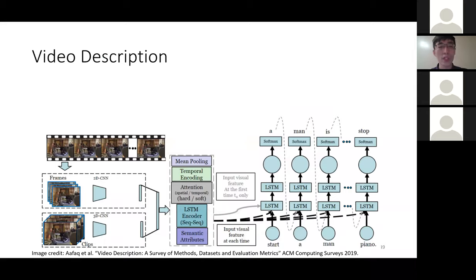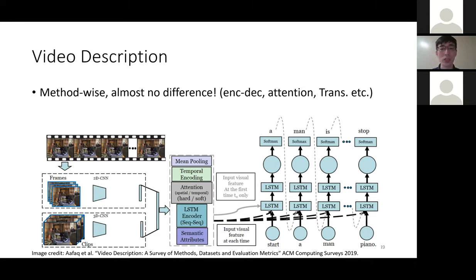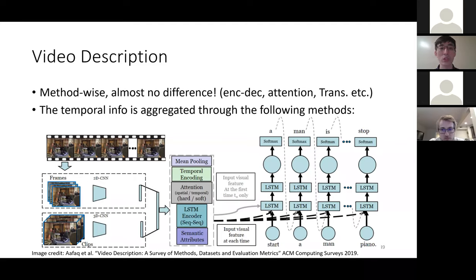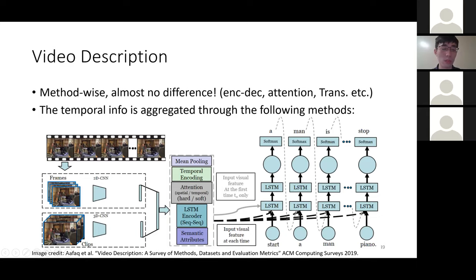For video description, the method is quite similar to what we've covered: people use encoder-decoder, attention, and transformer for modeling. We pay special attention to capturing temporal and motion information. To capture local motion information, we use 3D CNN and optical flow. To capture longer temporal dependencies, we use LSTM, transformer, and attention mechanisms.